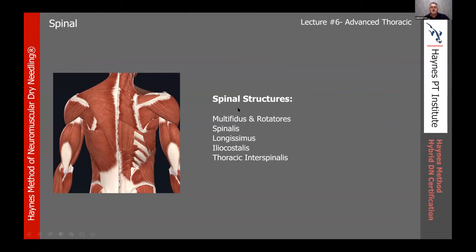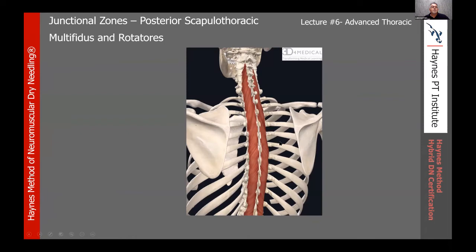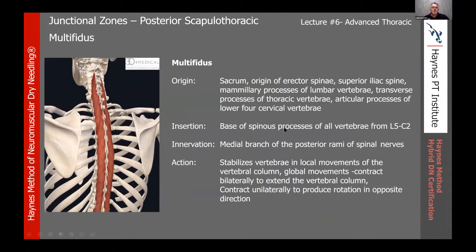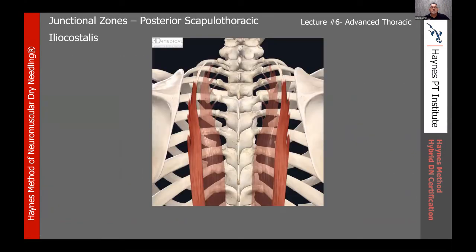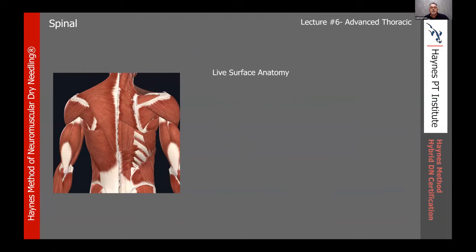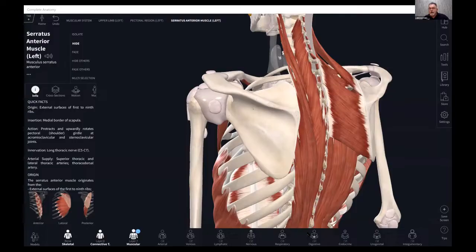Moving on to our spinal structures — we'll look at the multifidus, rotatoris, spinalis, longissimus, iliocostalis, and thoracic interspinalis. All 3D anatomy images are from the Excelsior company with their Complete Anatomy platform. I highly recommend using a 3D anatomy application for learning anatomy for dry needling.